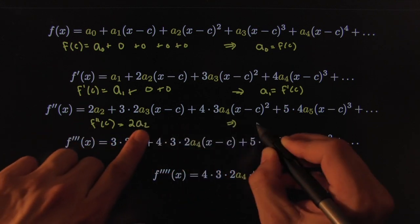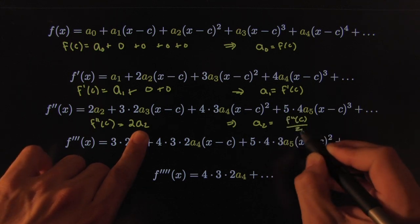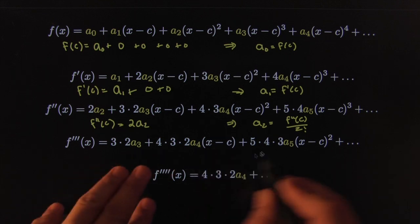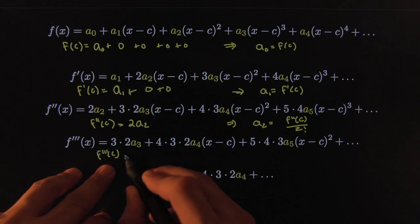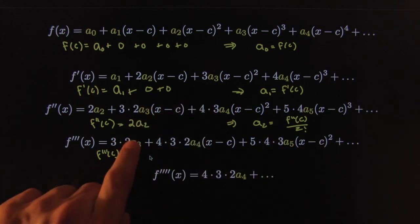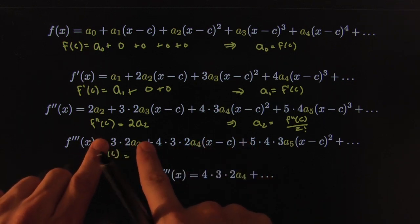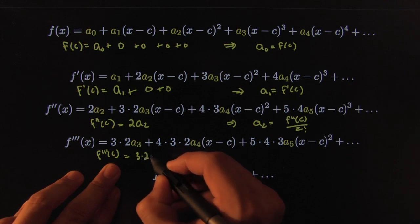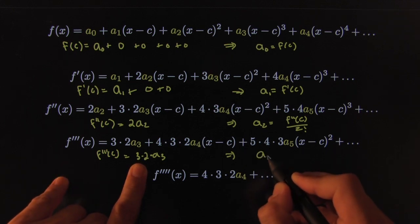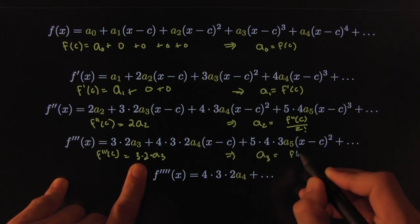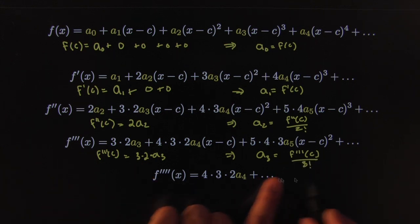You see the pattern coming up here. Again here, f'''(C): everything else is going to cancel except for the first item, the one that has no X minus C expressions in it. That would be the first piece—that's the only one that stays. So this is equal to 3 times 2 times a_3. This forces you to divide both sides by 3 times 2; it forces you into this corner. a_3 must be equal to the third derivative evaluated at C divided by 3 factorial. Same thing: f^(4)(C). The rest is going to cancel, and you get that the fourth derivative at C is equal to 4 factorial times a_4. This implies that a_4 must be the fourth derivative evaluated at C divided by 4 factorial.